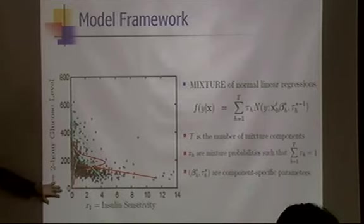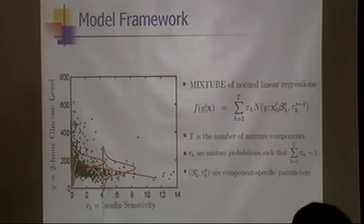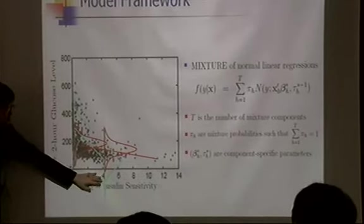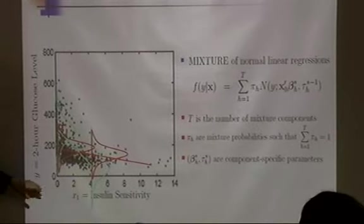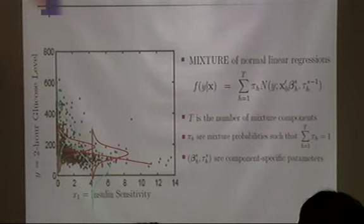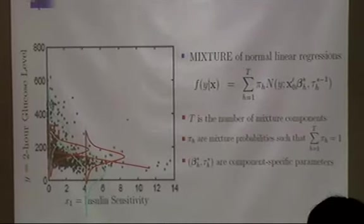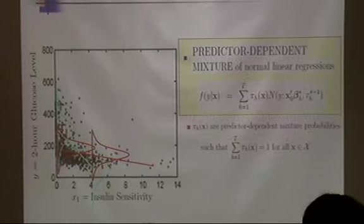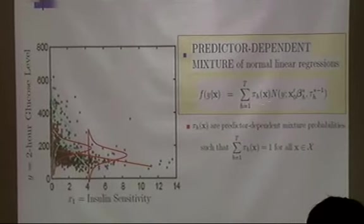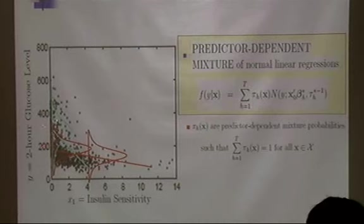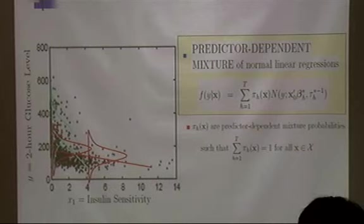However, using fixed mixture probability weights across the predictor space is problematic. In high insulin sensitivity regions, a fixed weight for the green regression component produces poor estimates. Instead, we want predictor-dependent mixture weights — starting half-and-half for low sensitivity and shifting most weight to the red component for high sensitivity. This is a predictor-dependent mixture of normal linear regression model, which better characterizes the conditional density.